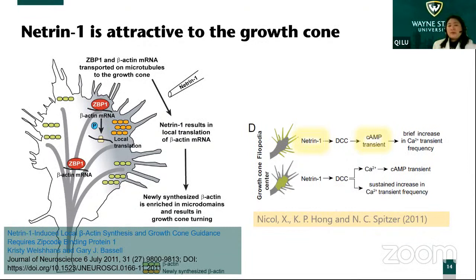If somehow the subcellular concentration of cyclic AMP is changed, that might induce the growth cone to change its growth direction.